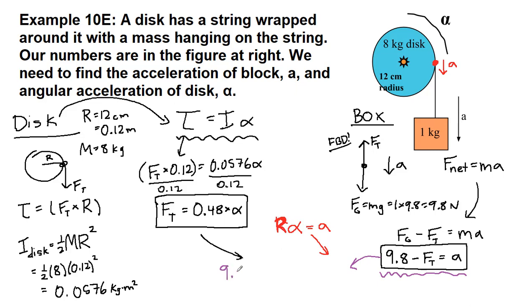So, the 9.8 was here already, minus, instead of tension, I'm going to write 0.48 alpha, and on the right side, instead of acceleration, I'm going to write 0.12 alpha.